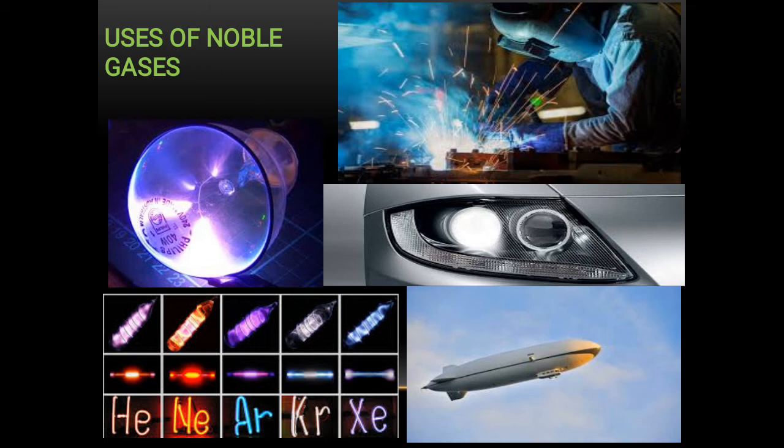Helium is used for filling weather or advertisement balloons and airships. Argon is used to make tungsten bulbs and it also provides the unreactive or inert atmosphere which prevents oxidation of the filament. You see, the gas which is filled here is argon.